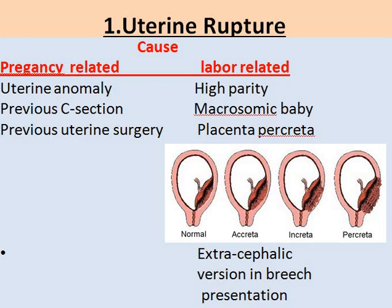Labor-related problems include high parity, macrosomic babies which can be due to diabetic mothers, and placenta percreta, in which the placenta invades up to the myometrium and even the perimetrium. Another condition is external cephalic version — whenever there is a breech presentation, external force is applied to push the baby's head into the vertex position in order to deliver it vaginally.